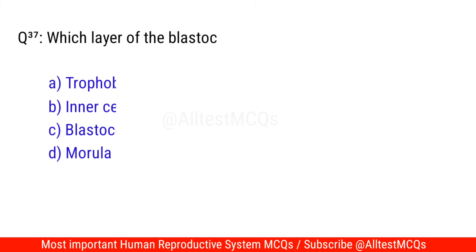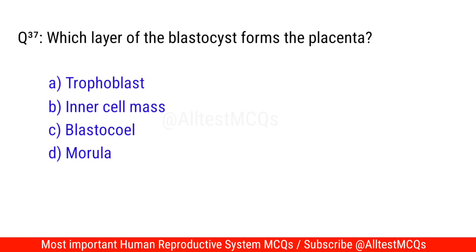Question No. 37: Which layer of the blastocyst forms the placenta? The correct option is A. Trophoblast.